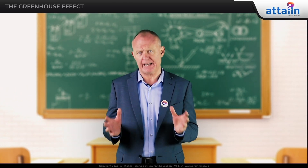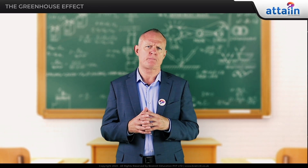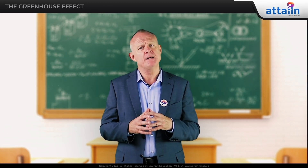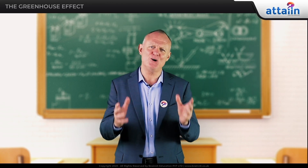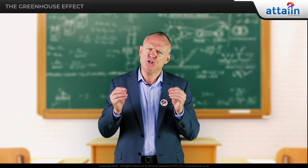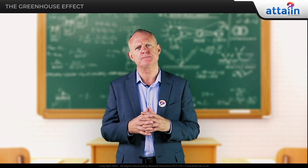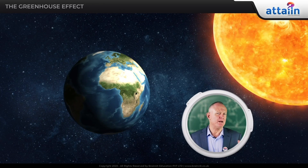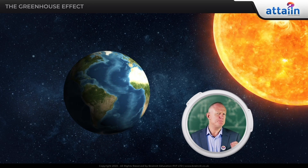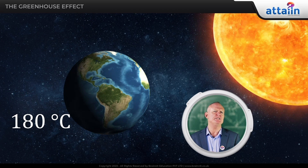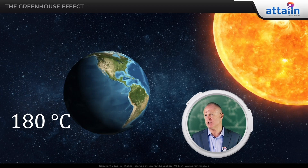Greenhouse gases occur naturally and are part of our atmosphere's makeup. For that reason, the conditions are not too hot and not too cold, but just right to allow life to flourish. Without an atmosphere, the surface temperature of the Earth would be roughly 18 degrees Celsius at night, the same as the surface of the Moon.